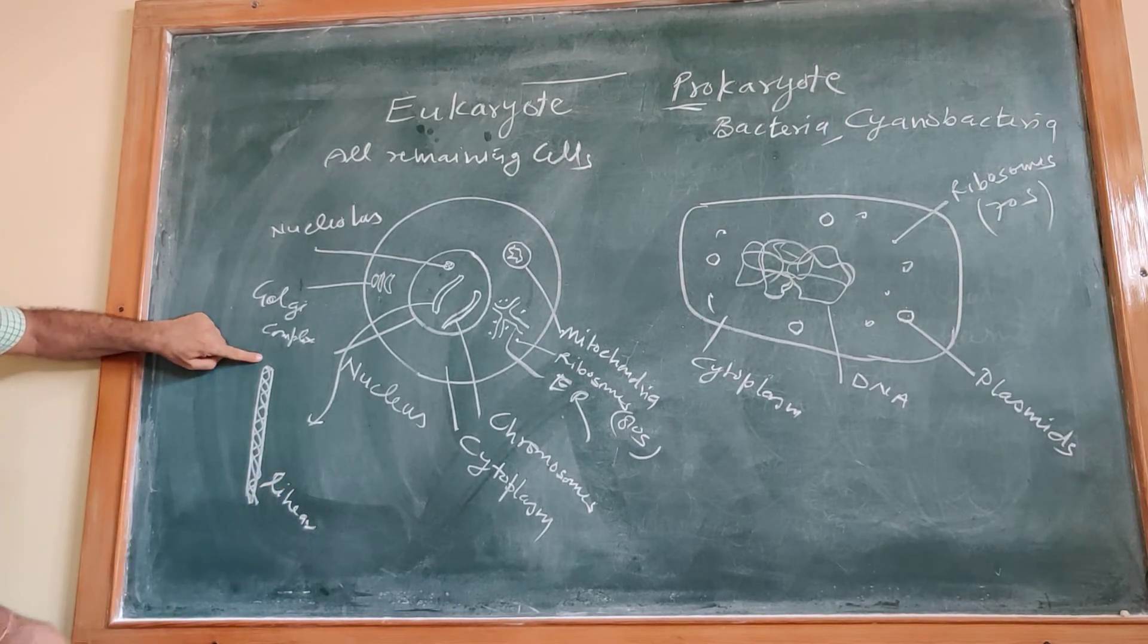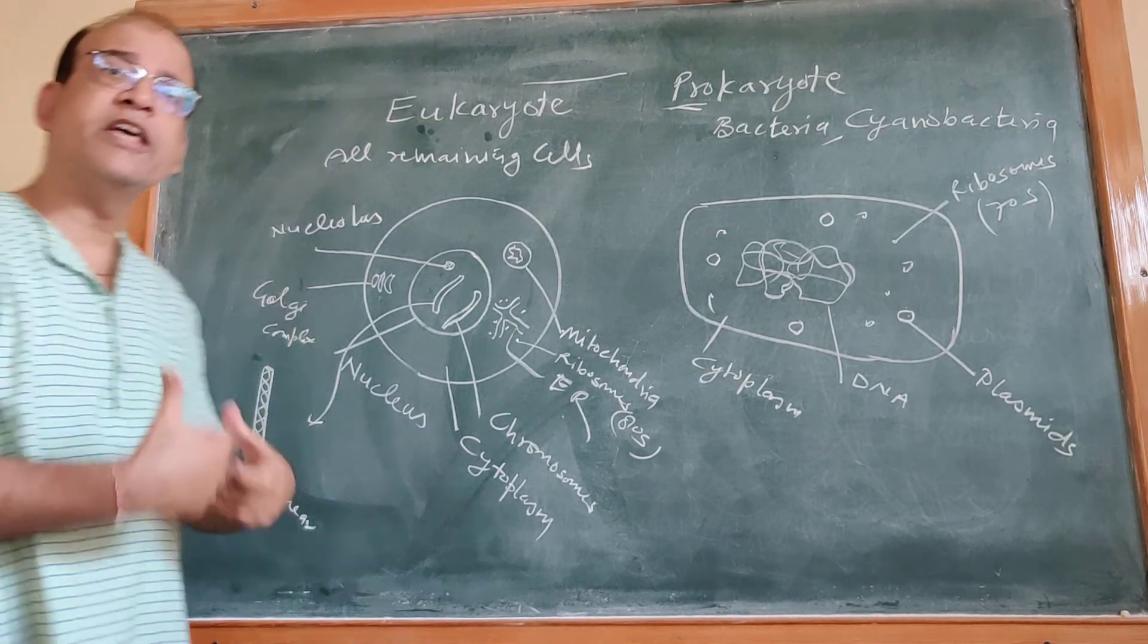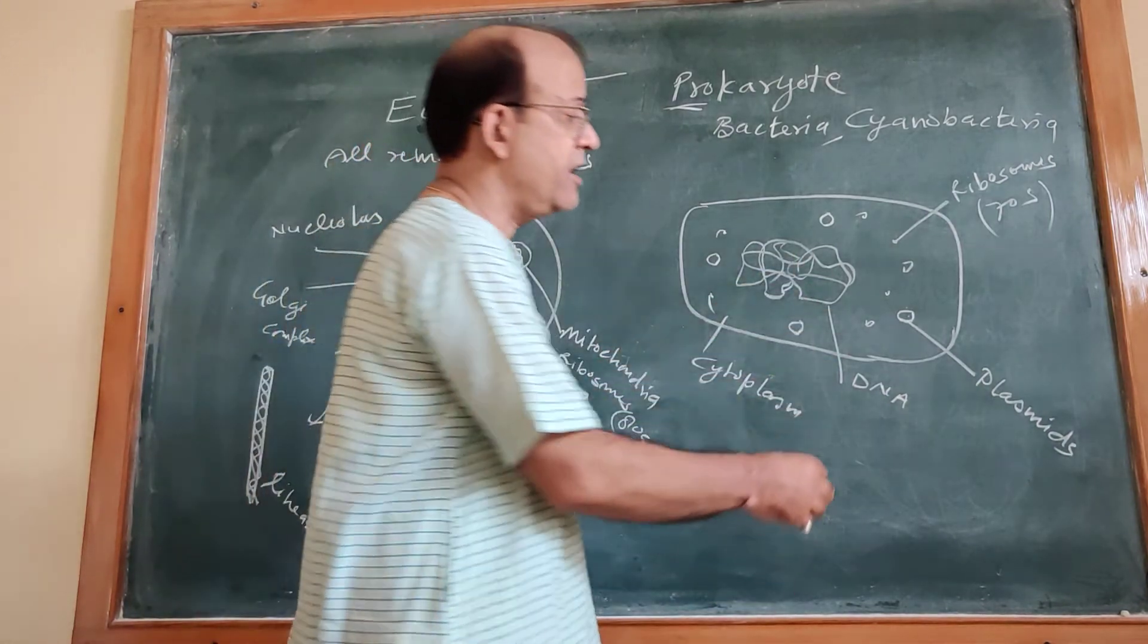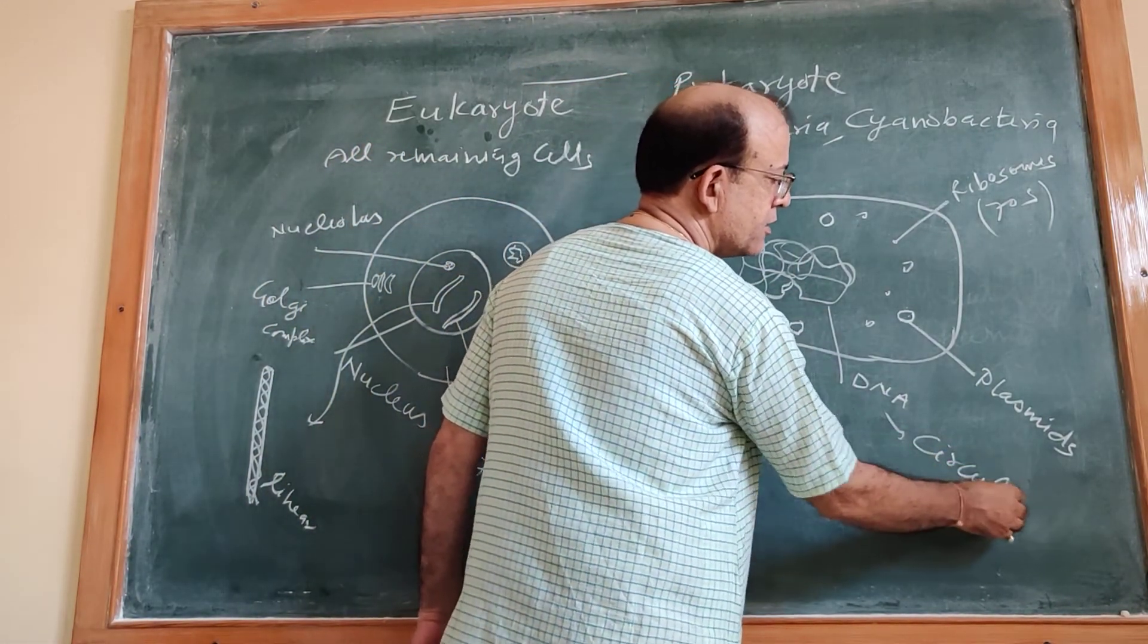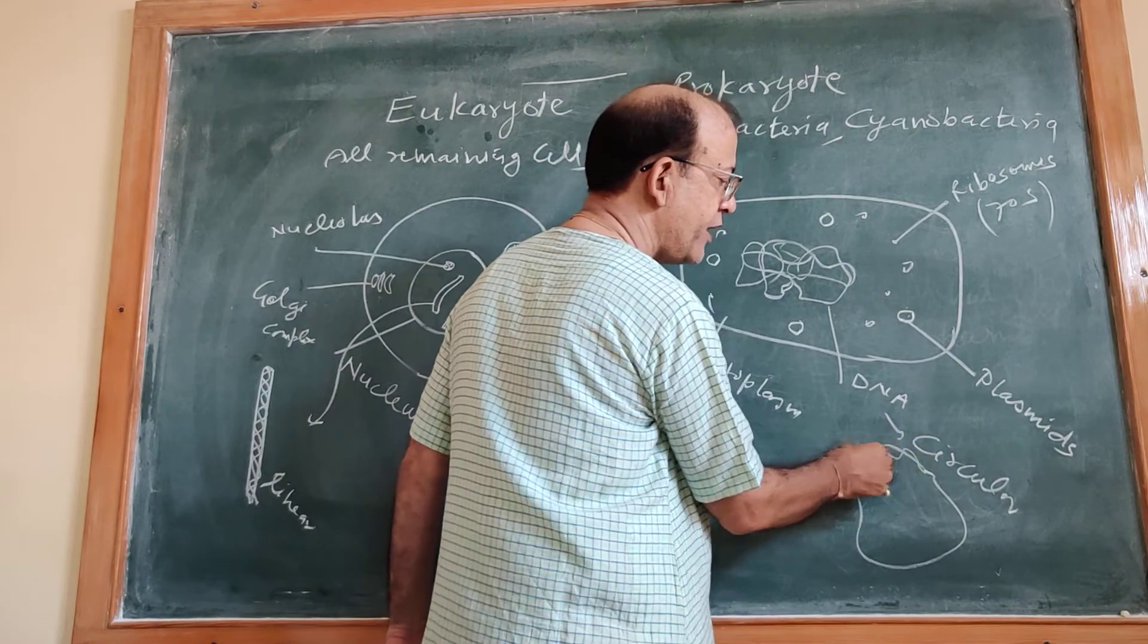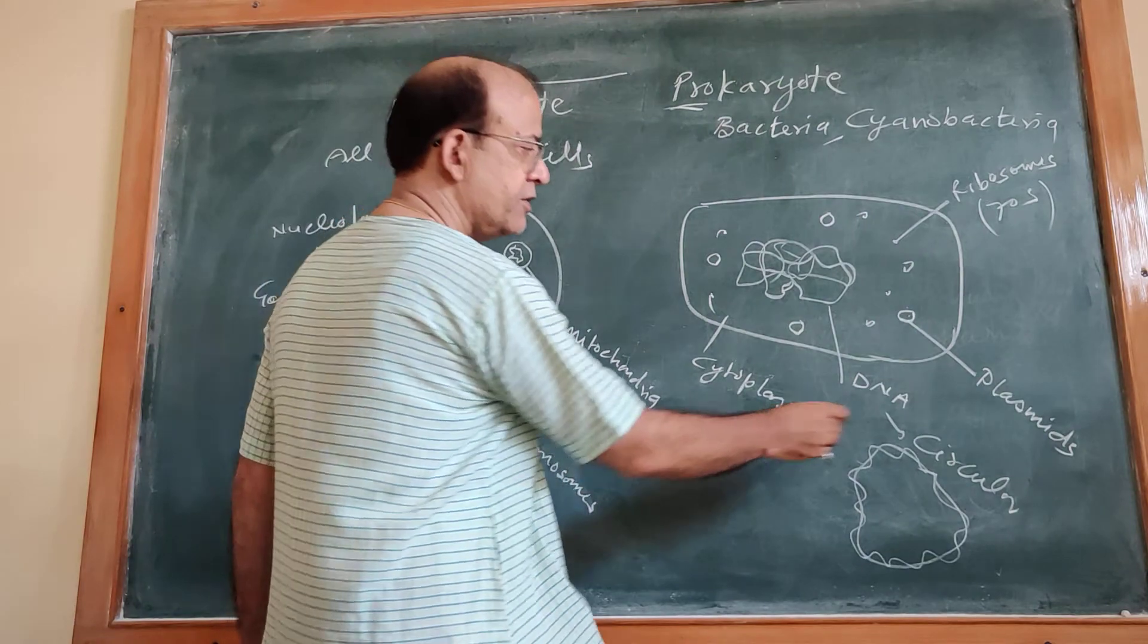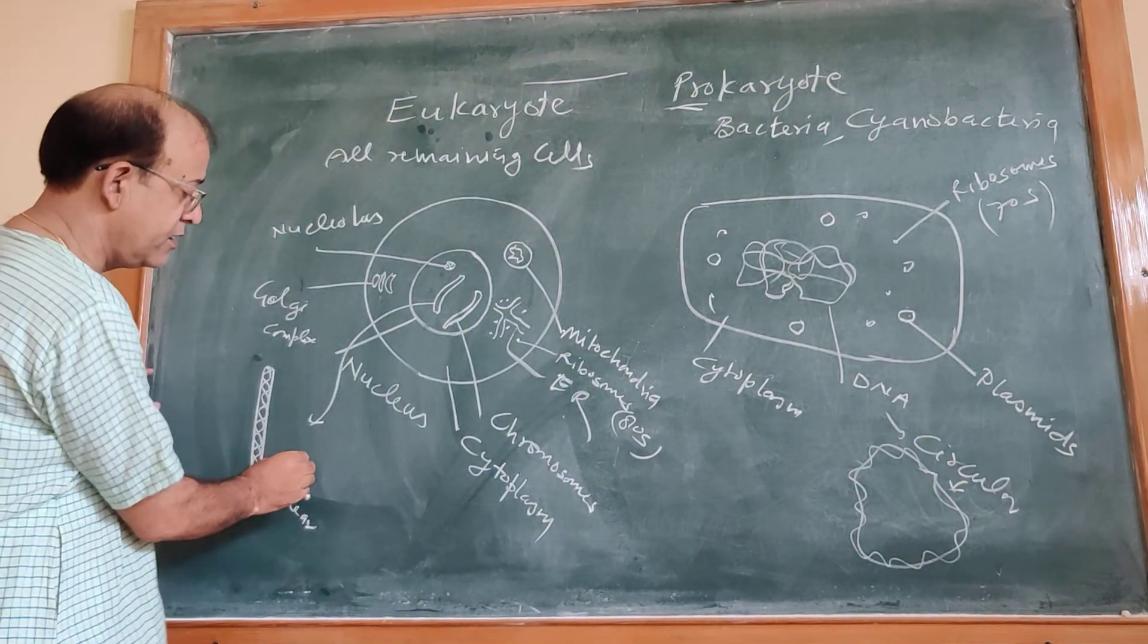It is linear. It means this is one terminal, this is another terminal. In a line, in a linear way. DNA is present. But here, the DNA is circular. It is in the form of a ring. The DNA is in the form of a ring. This is the DNA of prokaryotic cell. It is circular DNA. And it is linear DNA.